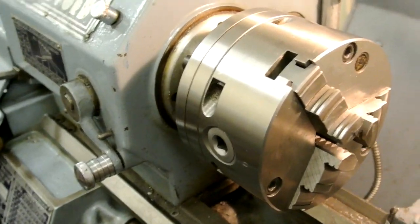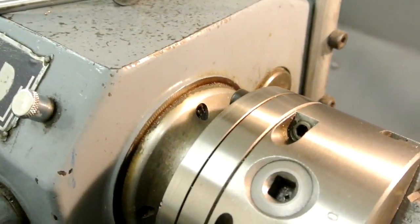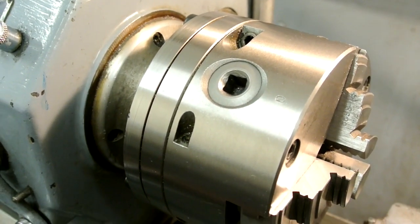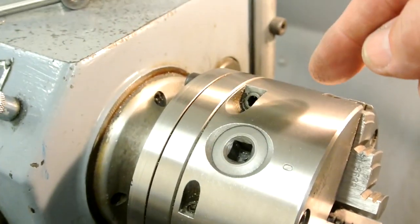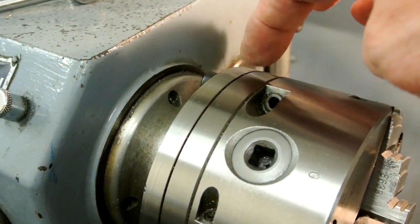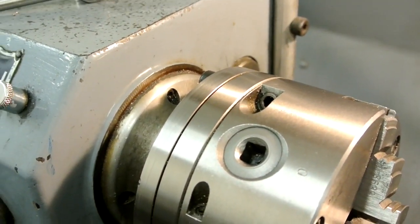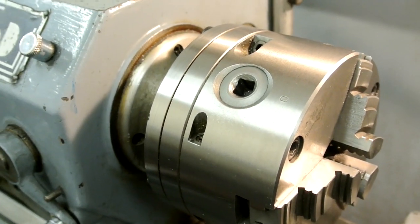It has adjustment screws on the sides, so it's a set true or grip true, or whatever you want to call it. You're able to adjust the body of the chuck by turning the screws on the side, and you get extremely low run-out when that's adjusted properly.